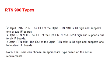The OptiX RTN 910 is 1U high and supports 1 or 2 IF boards. 1U is a measurement of transmission rack space. The RTN 910 can have two IF direction cards plugged in. The OptiX RTN 950 is 2U high and supports 1 to 6 IF boards. The OptiX RTN 980 is 5U high and supports 1 to 14 IF boards, meaning it requires more rack space for its IDU cards.